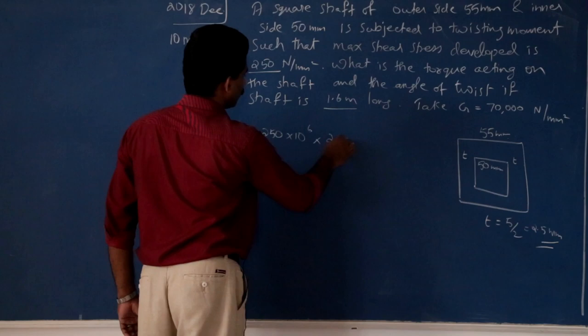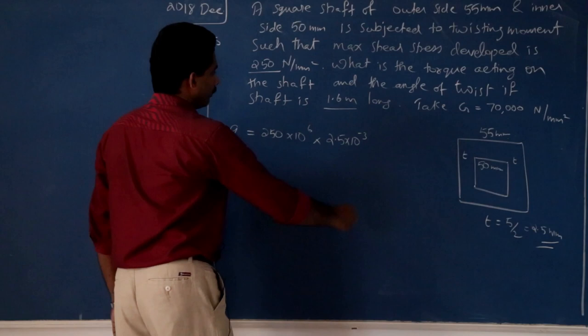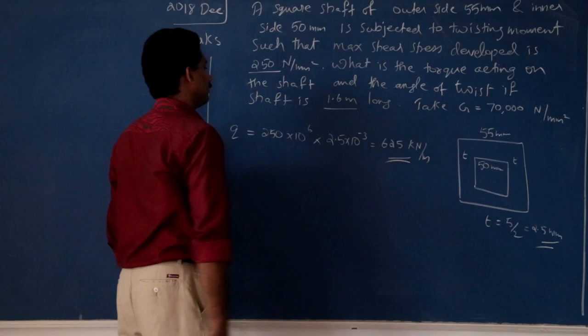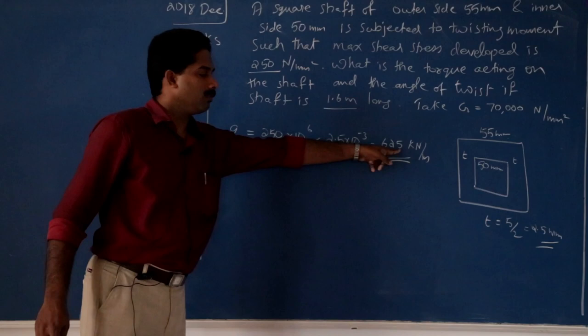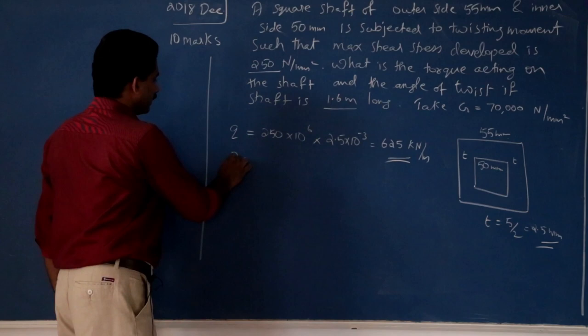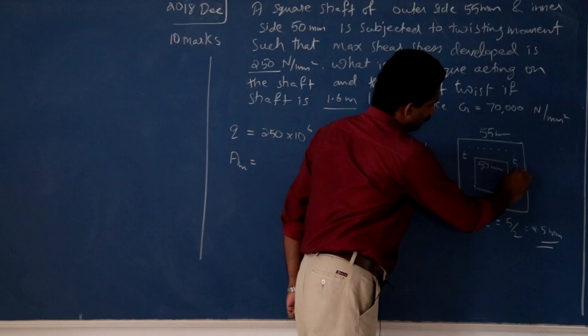250 into 10 raised to 6 into thickness 2.5 mm, so 2.5 into 10 raised to minus 3. That gives 625 kilonewton per meter — that is 625,000 newton per meter, so 625 kilonewton per meter. Now, mean area — draw the median lines. Median line is square because it is a square section — it is 50 mm and 55 mm.